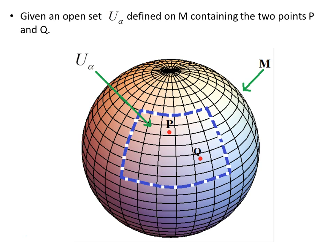We are given an open set U_alpha defined on some manifold M containing two points p and q. We are going to use the surface of the sphere as our example of a manifold, representing manifolds in general but purely as an example. So this is our manifold, with open set U_alpha and two points within that set, p and q.